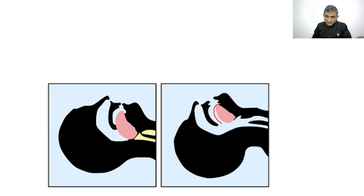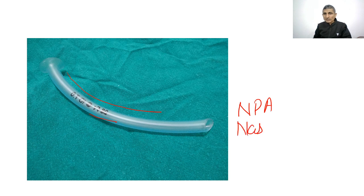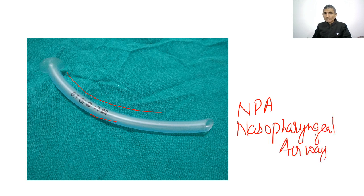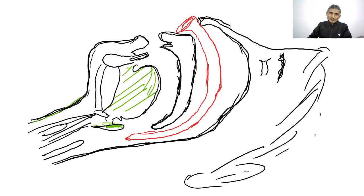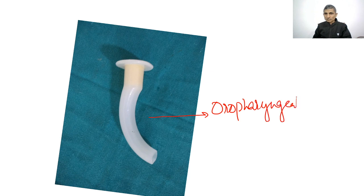When a patient is anesthetized, the tongue falls posteriorly and obstructs the airway. To maintain a patent airway, airway adjuncts are used. The nasopharyngeal airway is passed through the nares to keep the airway patent. The oropharyngeal airway (such as the Guedel airway) is passed through the oral cavity to maintain airway patency.